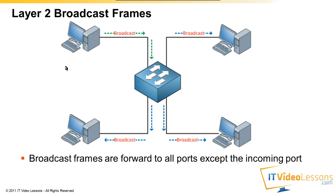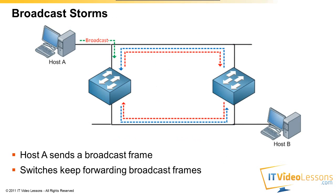So here is an example of what I just showed you. The computer on the top left is sending a broadcast, and this broadcast will be forwarded out of all of the ports that the switch has, except the one where it came from. Here is the broadcast storm again — Computer A, the top left one, is sending a broadcast frame and the switches will just keep forwarding it. And of course the computer on the bottom right, Host B, will also receive all of those broadcast frames.